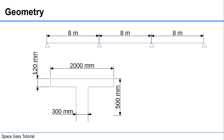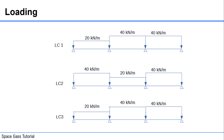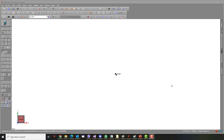Hi, welcome to Space Gas Tutorial. In this video, we will be modelling and analysing a 3-span continuous T-beam of 8 metres, which is used to support a 120mm thick slab spanning 2 metres between the T-beams. The beam is subjected to three load cases, as shown in this diagram. We need to find out the bending moment and shear force envelopes from these load cases. Let's get started.